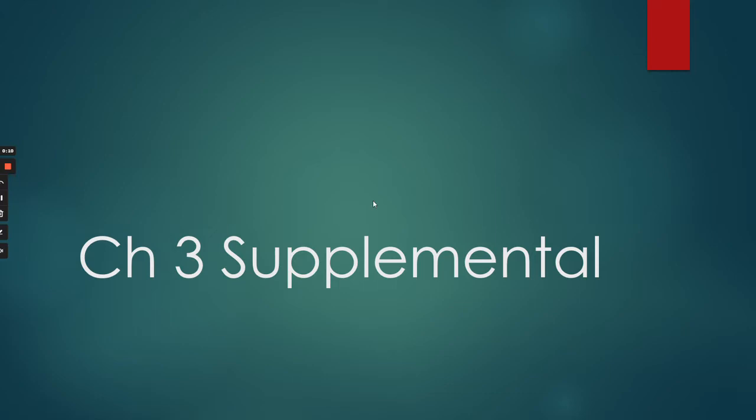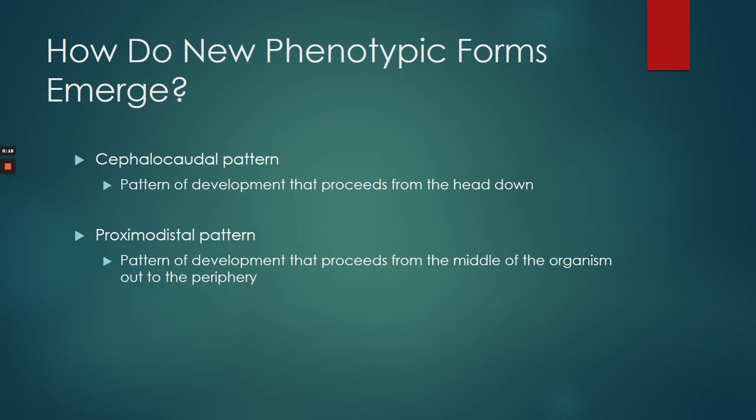One thing we want to talk about in terms of prenatal development is how the embryo develops phenotypic forms. This basically means that you're taking the genetic information of the fetus and the fetus develops into a certain form — that's a phenotype.